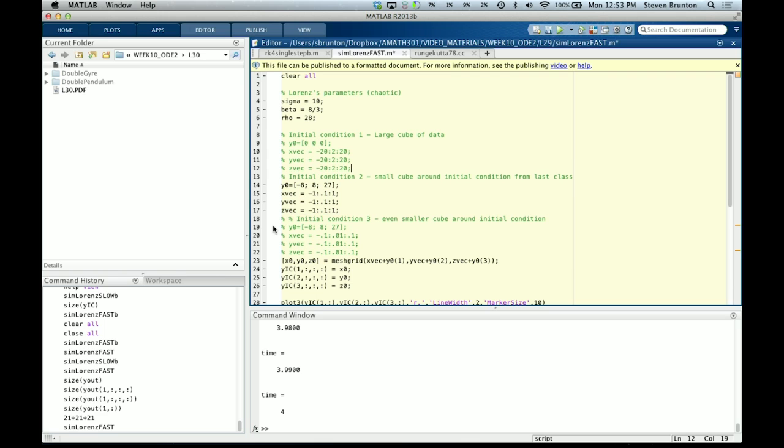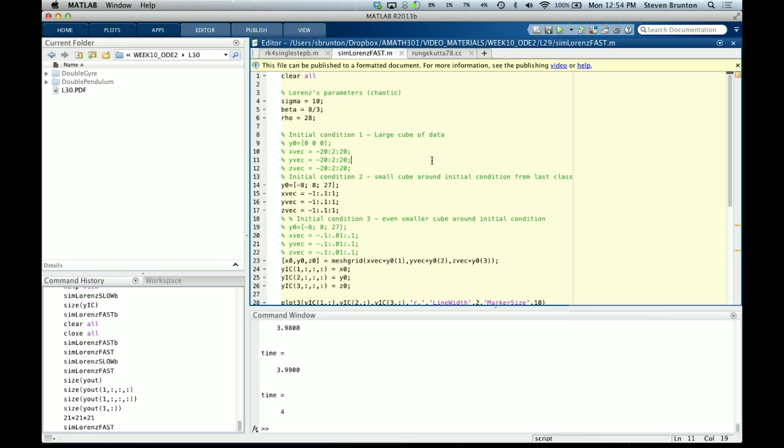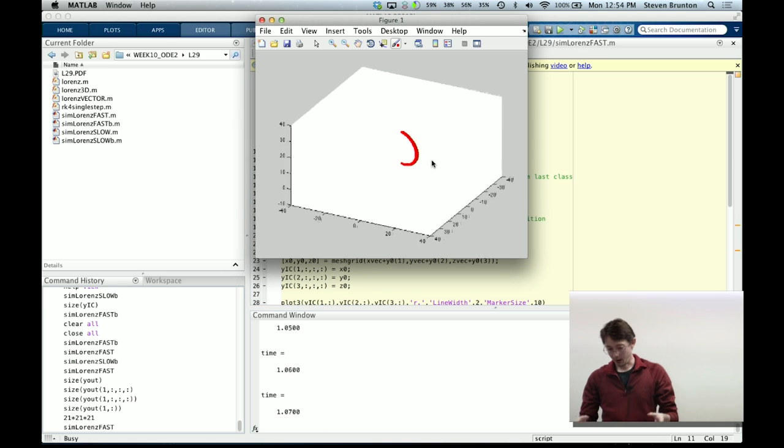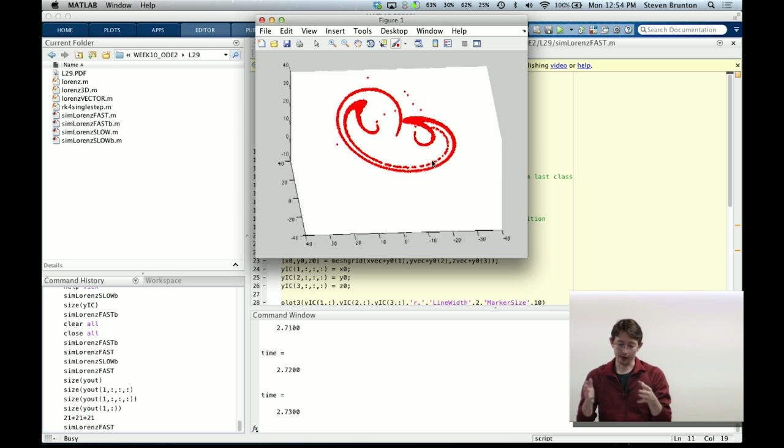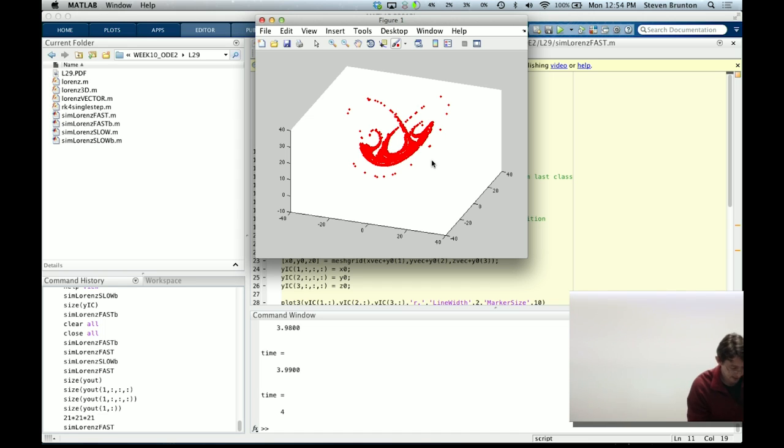And the last example we showed, we took a small cube of particles and integrated them through the Lorenz equations. So these are equations that were developed in 1963 by Ed Lorenz to describe complex weather systems. And it turns out that they are some of the simplest systems that exhibit chaos. So I want to just remind you on the computer what this trajectory kind of looked like.